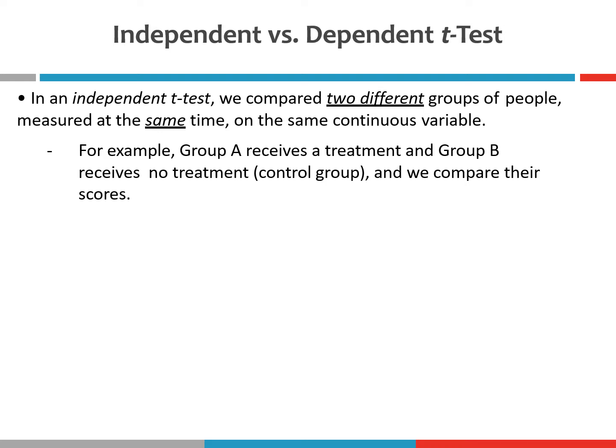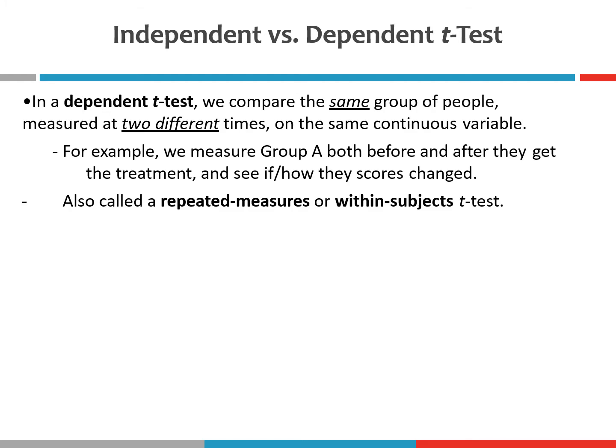In an independent t-test we're comparing two different groups of people measured at the same time on the same continuous variable. So for example, group A might receive a treatment and group B receives no treatment, and we compare their scores. Maybe people in group A get an antidepressant, people in group B get a placebo, and then we compare their scores on some kind of depression inventory. That's an example of the kind of experiment where we would use an independent t-test.